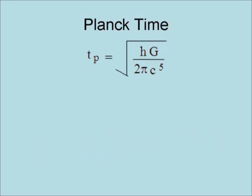Here is the formula for Planck time. Planck time equals the square root of Planck's constant times the gravitational constant divided by 2π and the speed of light to the fifth power. Its value is 5.39124 times 10 to the negative 44 seconds.